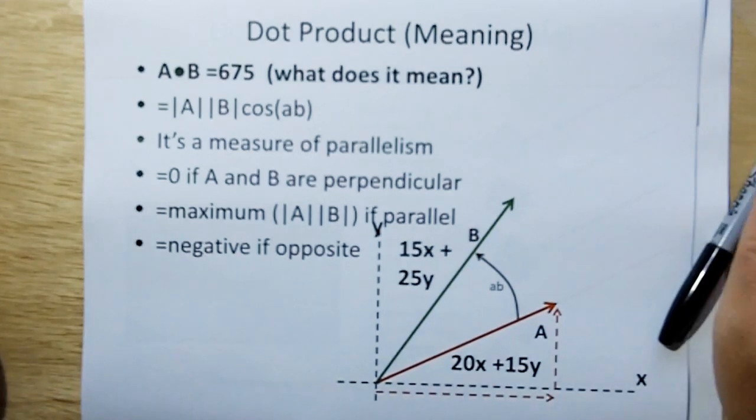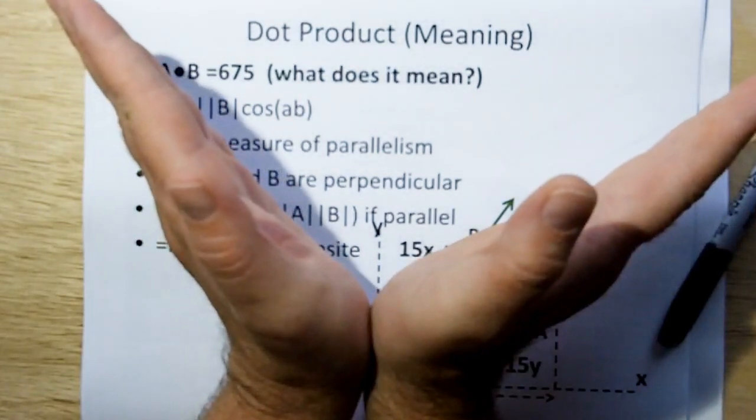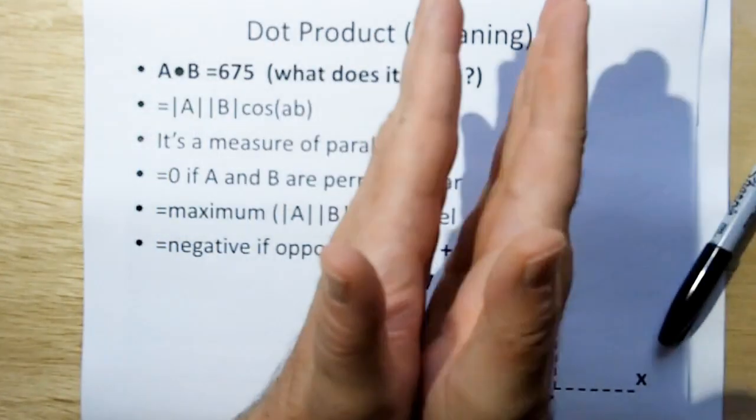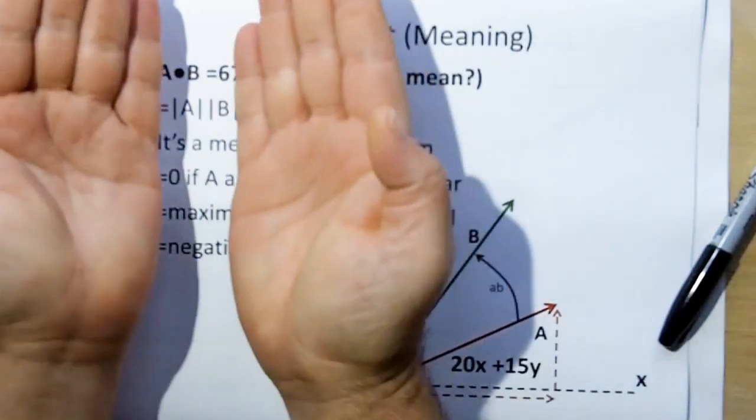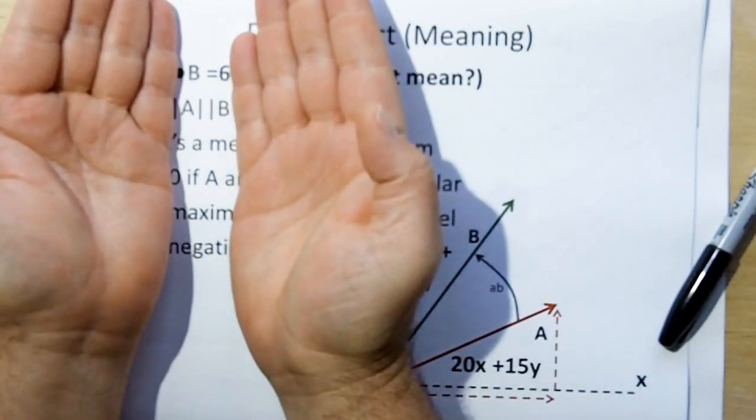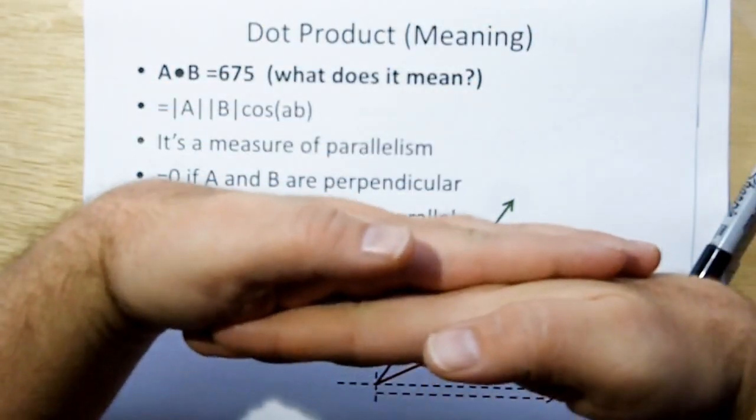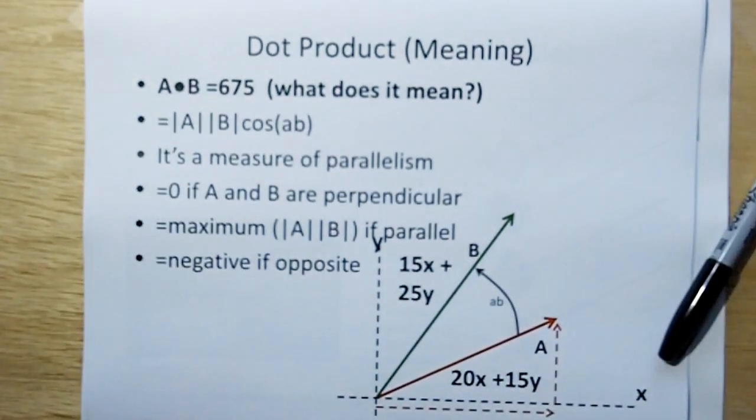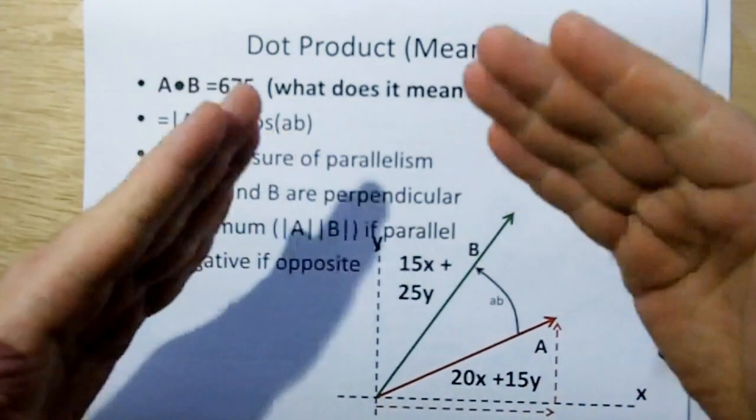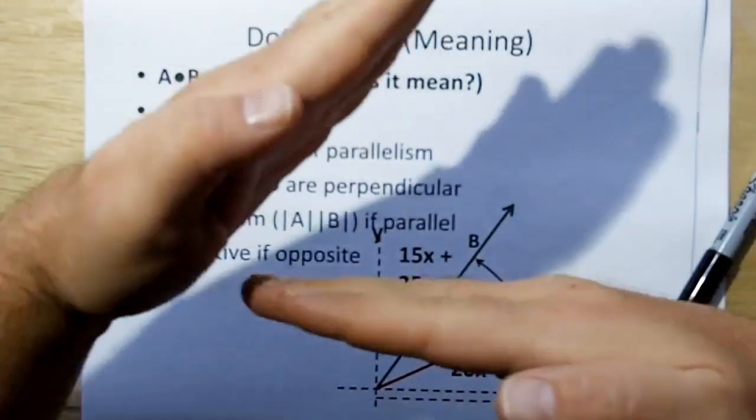So if A and B are perpendicular, the result comes out to zero. If A and B are completely parallel, you get the maximum value, which is the magnitude of A times B. And if they're going in opposite directions, then you get the maximum value, but the result is negative. So if you get a negative number, that means your vectors are going in opposite directions.